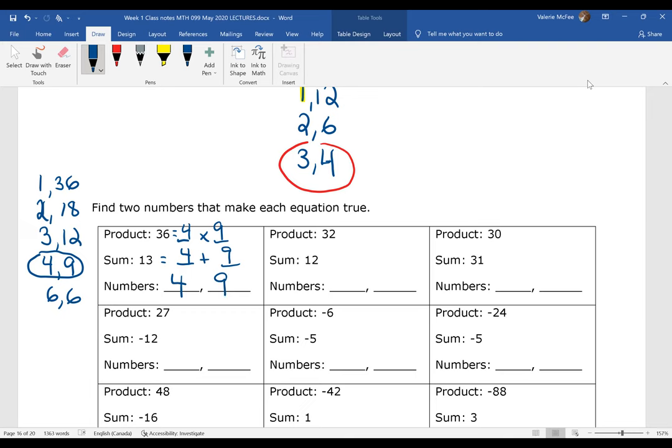Let's try 27 and negative 12. This is our product. This is our sum. List the factors of 27. It's going to have to be 3 and 9. But I need a sum of negative 12. These both need to be negative. And that's good because negative 3 times negative 9 gives me that positive 27.